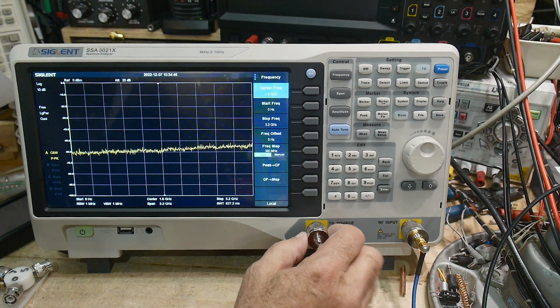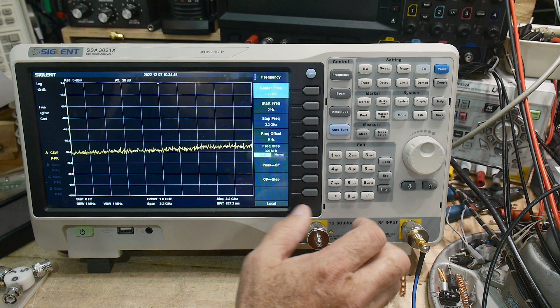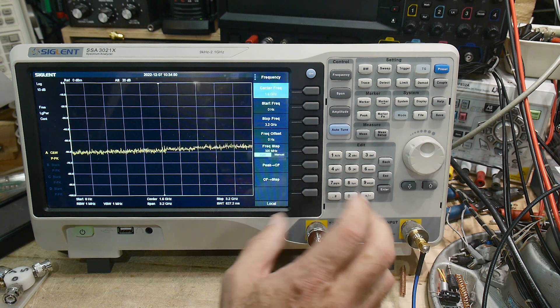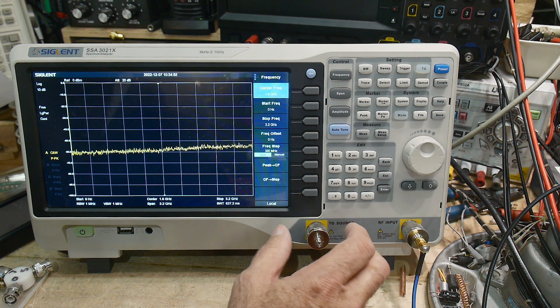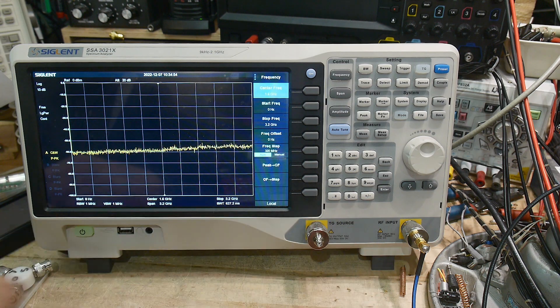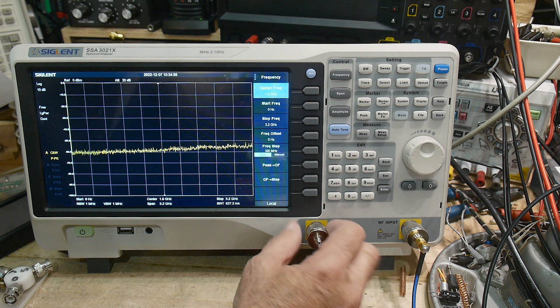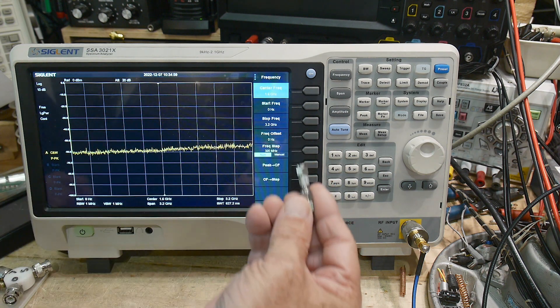Okay, let's do a simple demonstration. If you get a spectrum analyzer with a tracking generator, you'll want to measure something, and one of the things you'll probably have is an attenuator. So let's see if we can measure an attenuator.